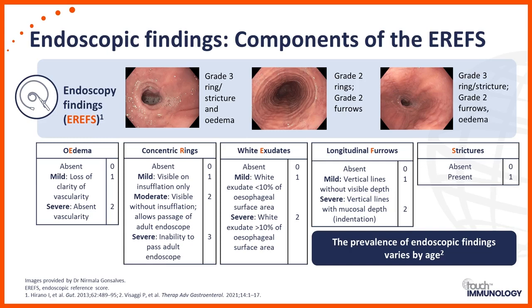Common endoscopic features are described using the endoscopic reporting tool, the EREF score. This is a very helpful tool to assess whether endoscopic changes are improving with therapy. With edema, a score of zero reflects a normal vascular pattern where blood vessels are visible coursing through the esophagus. Loss of that vascular pattern — decreased or absent vascularity — scores one. Concentric rings are graded zero for absent, one for mild rings visible only on full insufflation, two for moderate ridges visible without insufflation but still allowing passage of an adult endoscope, and three for severe rings preventing passage of an adult endoscope, suggesting a stricture less than nine millimetres in diameter.